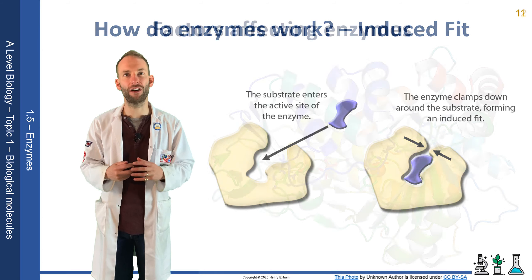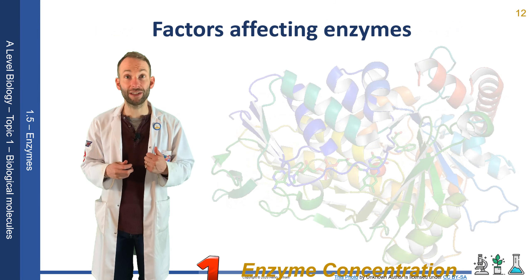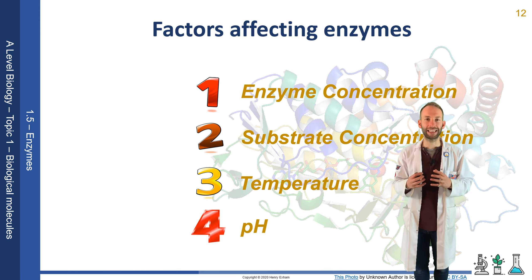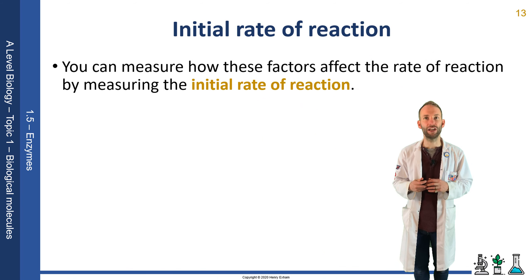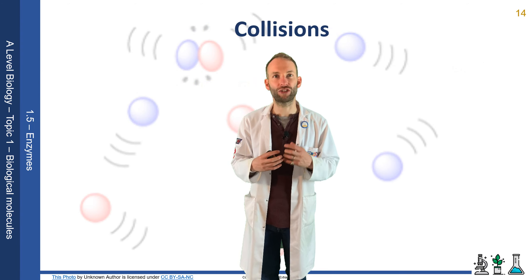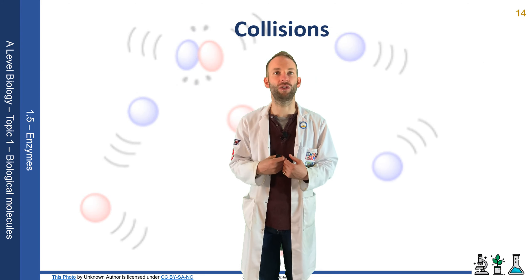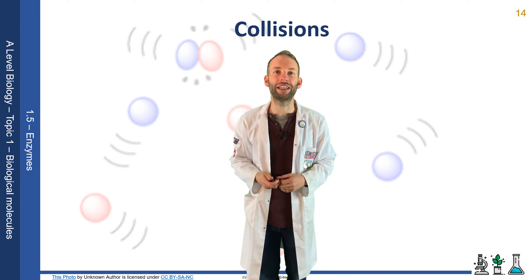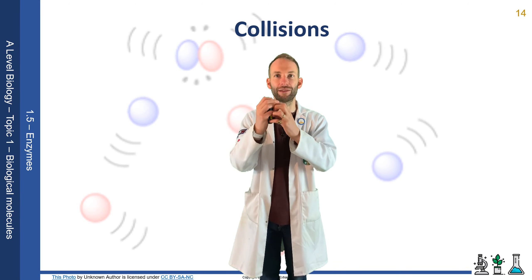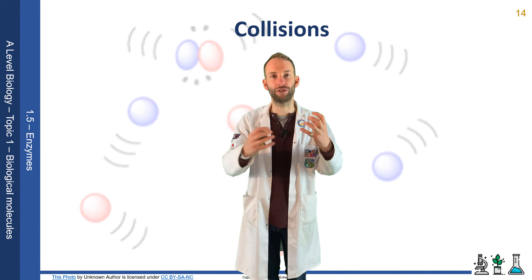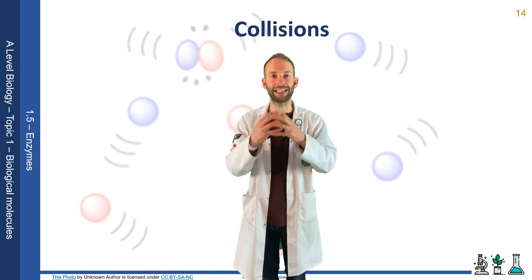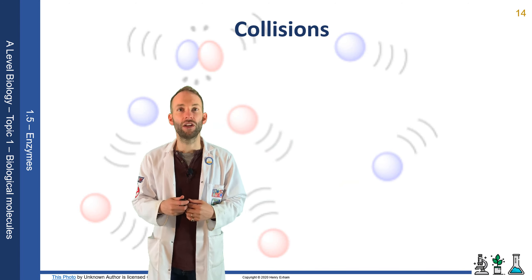Certain variables can affect how fast an enzyme-catalysed reaction takes place. We're going to look at enzyme concentration, substrate concentration, temperature, and pH. It's important to measure the initial rate of reaction by measuring the amount of product formed in a given time. To explain changes in rate, you must use collision theory — enzymes move around randomly and when they collide with a substrate with enough energy, the reaction takes place. They form an enzyme-substrate complex, release the products, and the enzyme is free to collide with another substrate.